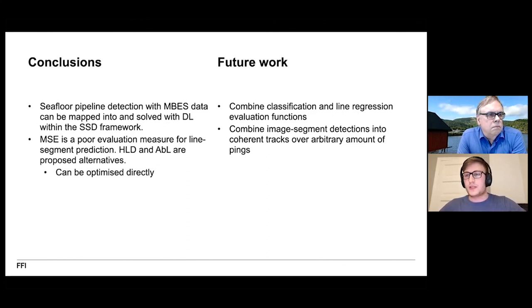For future work, it would be interesting to try to combine this classification measure and this line regression evaluation into one succinct evaluation function similar to something like mean average precision in mainstream object detection, where you could for example replace the intersection over union with either the Hausdorff line distance or the area between lines. Furthermore, we also want to explore ways of combining individual detections into one coherent track over arbitrary many pings. And with that, I would like to thank you for the attention. Thank you.